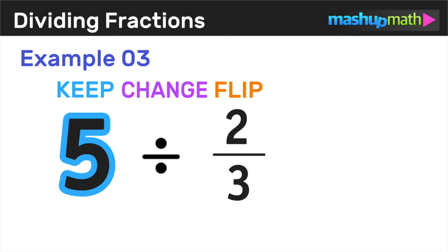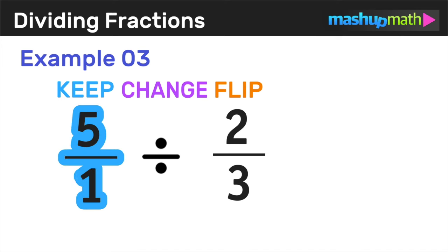So the first step of keep is still the same, except the number 5 is not a fraction, but we can easily turn it into a fraction by rewriting it as 5 over 1. And this works for any whole number. So you can always rewrite a whole number as a fraction by writing it over 1.